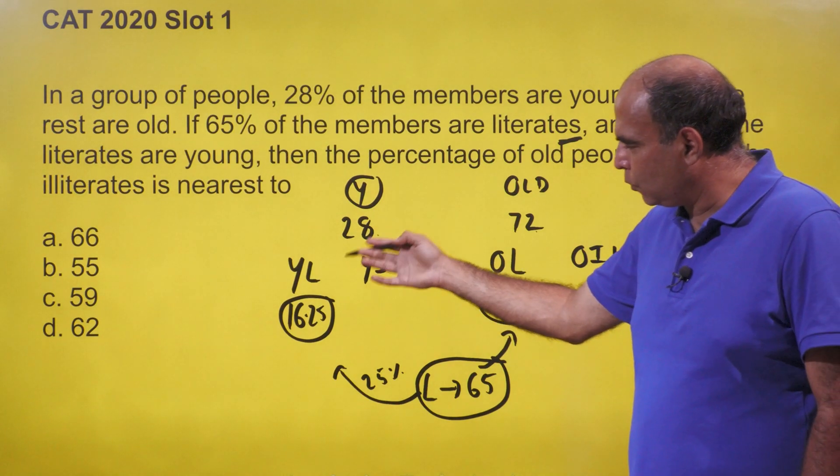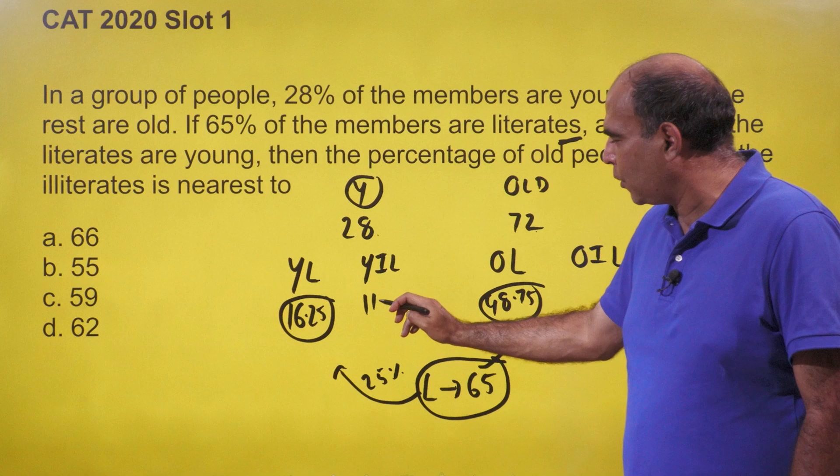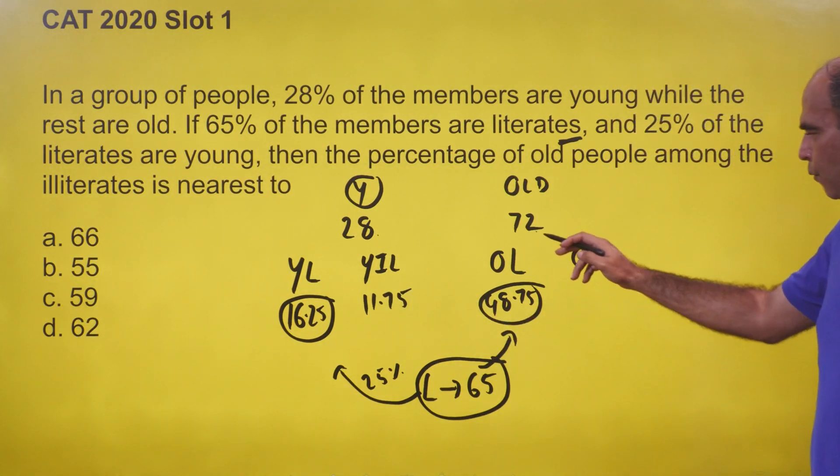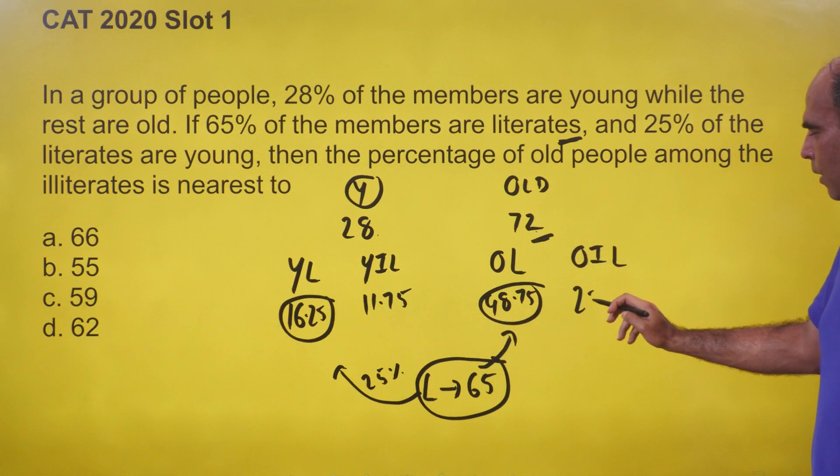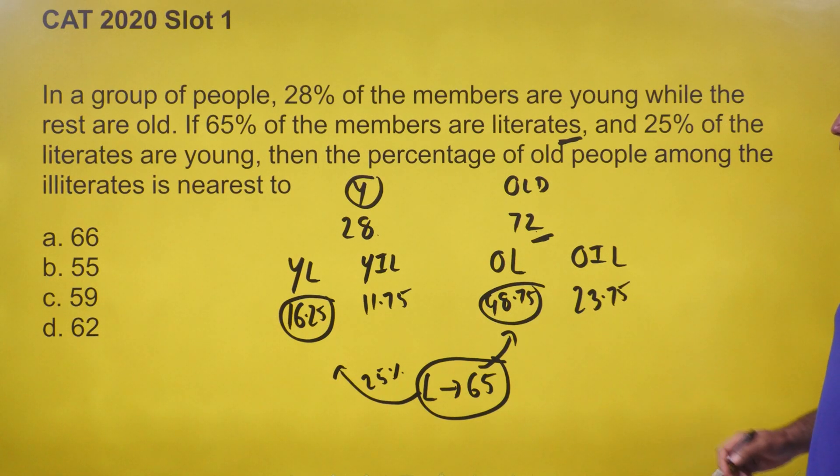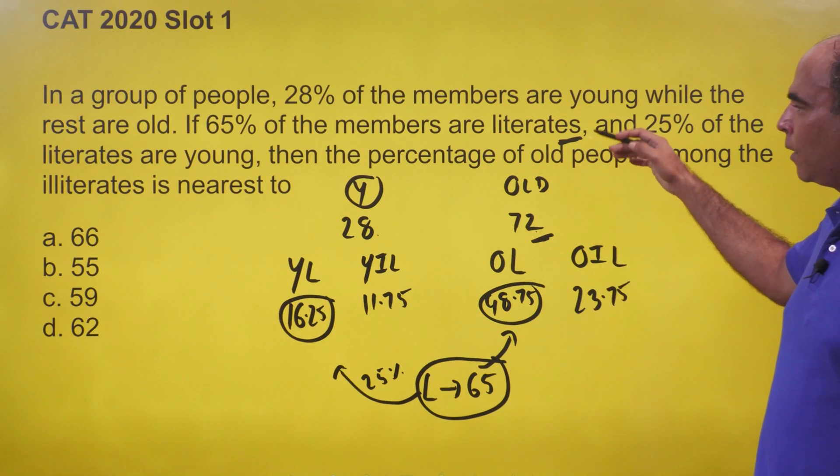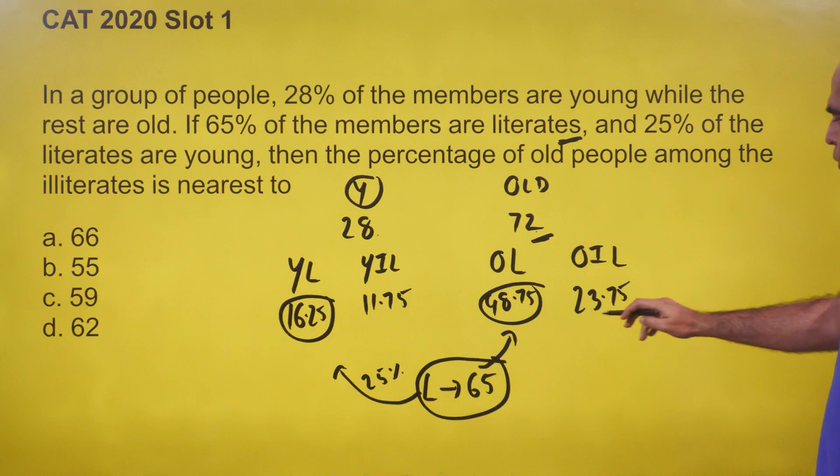So this is 11.75, and this sum is 72, so this is 23.75. The question asked is the percentage of old people amongst the illiterates. So the total illiterates is 35.